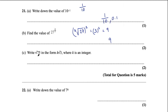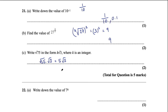Part c says write the square root of 75 in the form k√3, where k is an integer. We need to think of the factors of 75 — 25 times 3 is 75 — so we can write this as the square root of 25 times the square root of 3. The square root of 25 is 5, so we end up with 5√3, therefore k equals 5.